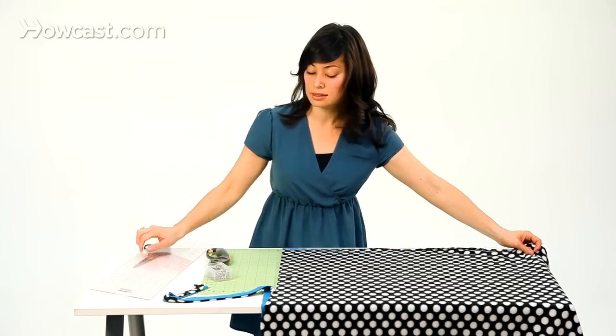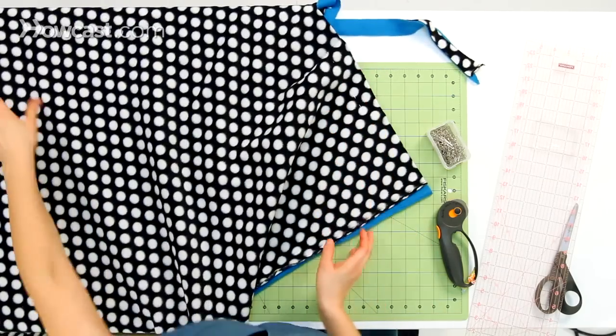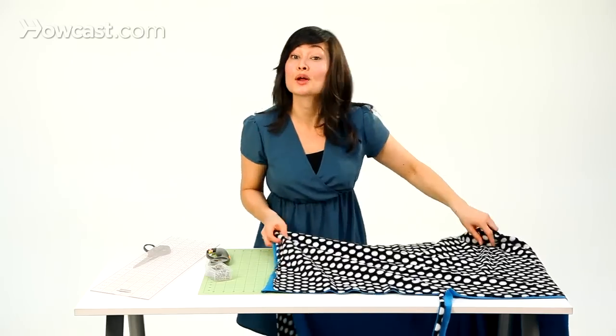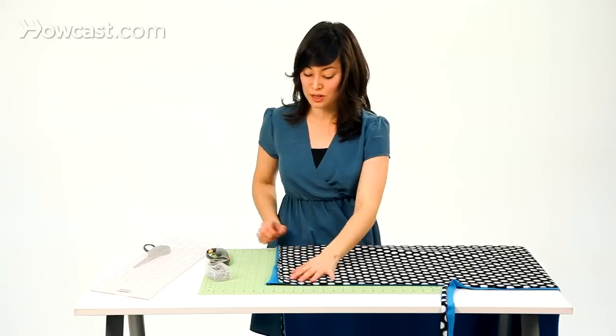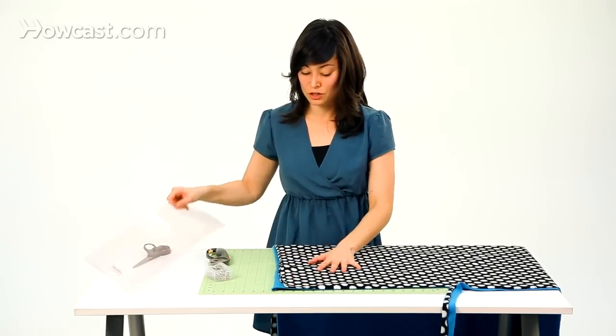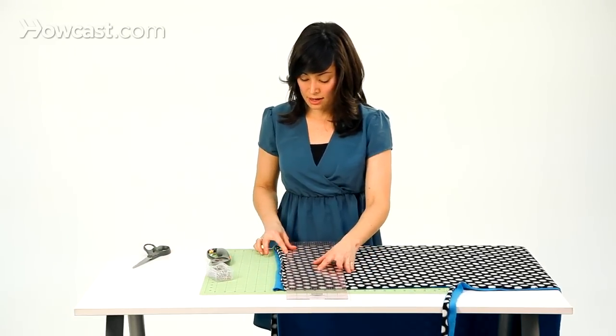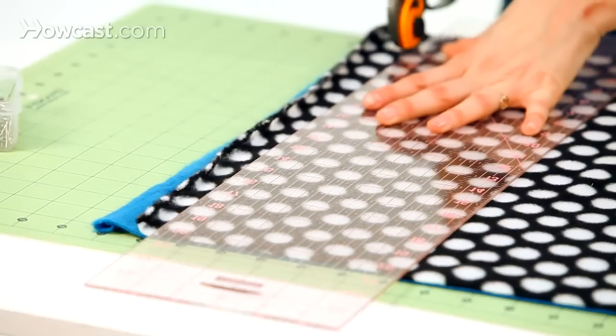And then you can go ahead and rotate your fabric, or if you're working on a really big table, which is really nice, you can walk around your table without disturbing your fabric, which is the best thing to do. And then go ahead and trim off this side.